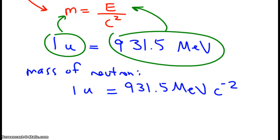In other words, we can treat megaelectron volts per C squared. That can be treated as a unit of mass.